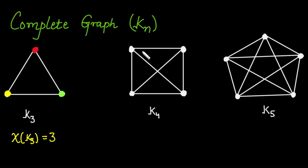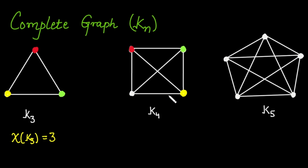Now let's color the K4 graph and determine its chromatic number. We start with the first vertex — assign it red. The second vertex is adjacent to the first, so we assign it green. The third vertex is connected to both first and second, so it cannot be red or green — assign it yellow. The fourth vertex is connected to the first, second, and third, so it cannot be red, green, or yellow — assign it blue. Total colors used is 4, so the chromatic number of K4 is 4.